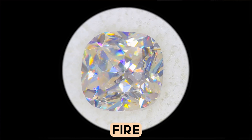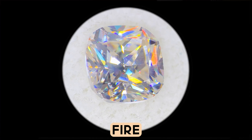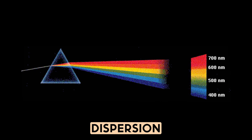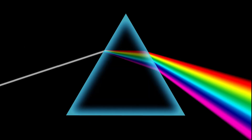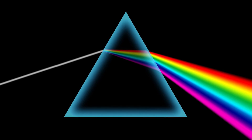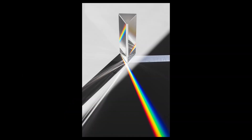Another effect talked about in the gem trade is 'fire' — flashes of rainbow light. Fire is caused by a phenomenon known as dispersion. White light is actually a mixture of many different wavelengths of light and different colors. These different wavelengths are refracted by different amounts — for example, purple light gets bent more than red light — so you get a spreading out of the colors that allows you to see a rainbow. Dispersion is measured as the difference between the maximum and the minimum refractive index.